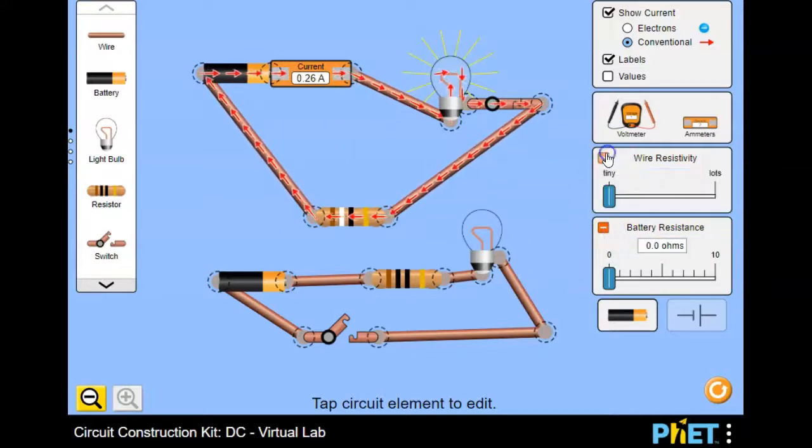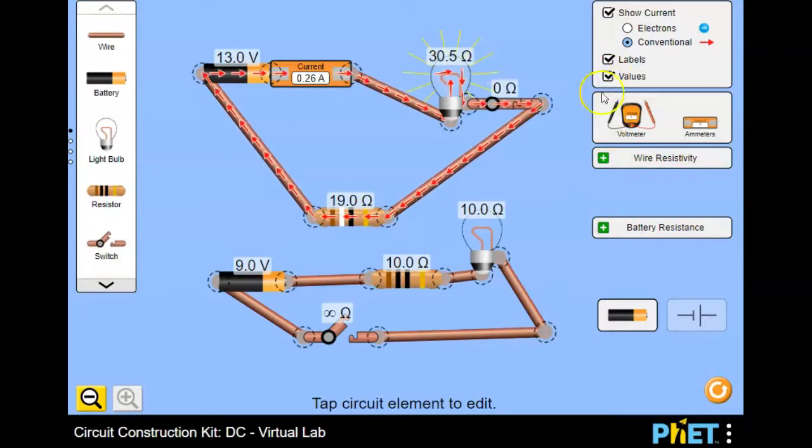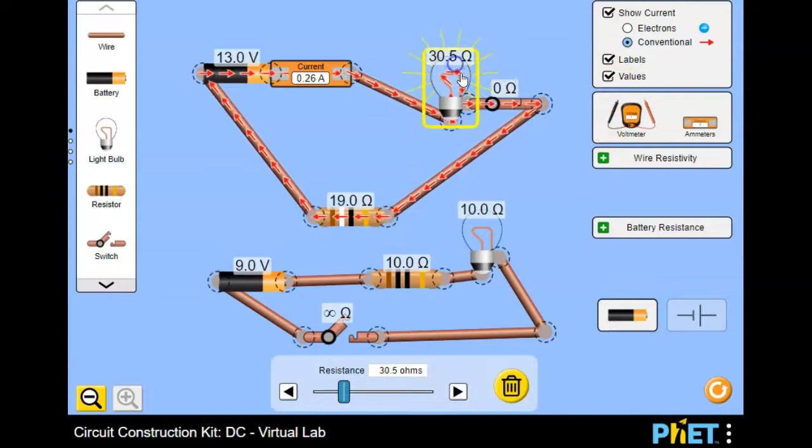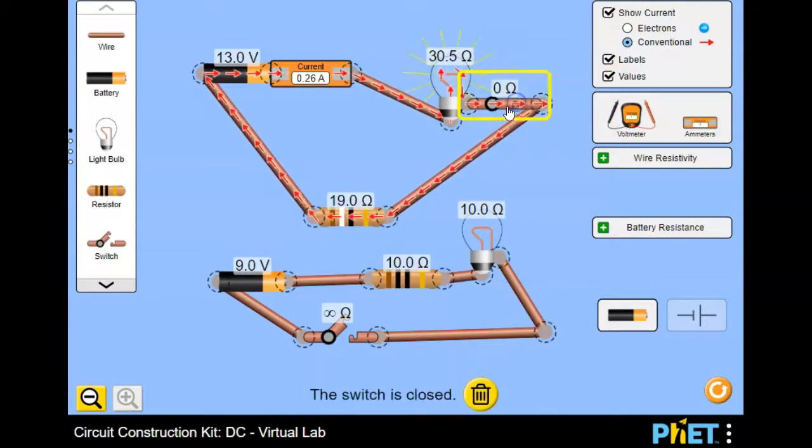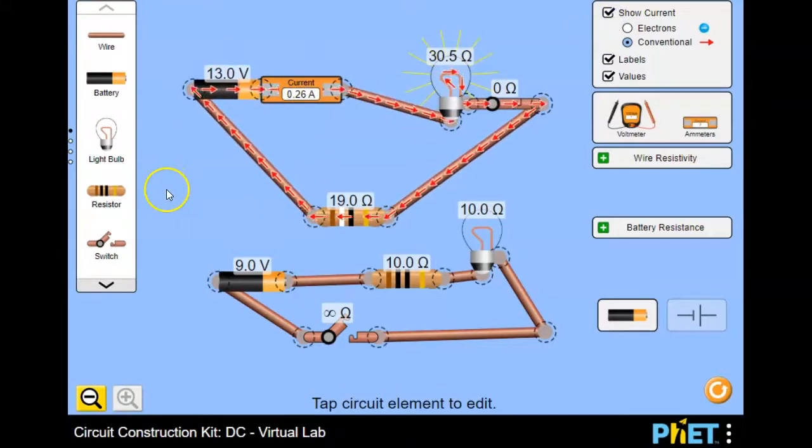There's some other menus here that you can play around with. You can turn the values on and off. So if I wanted to see what the value of the components are, I can turn that on and off. You can turn the current off.